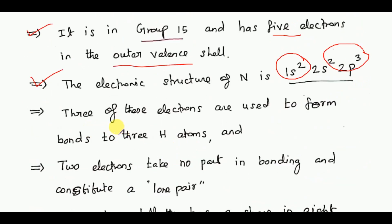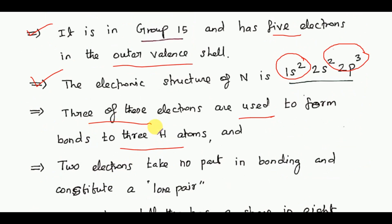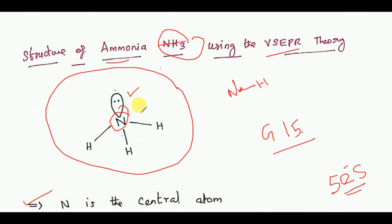Three of these electrons are used to form bonds to three hydrogen atoms. Look at the structure: one, two, three. Three electrons connect with three hydrogen atoms, meaning nitrogen's electron and hydrogen's one electron join together to form the bond. Two electrons take no part in bonding and constitute a lone pair.